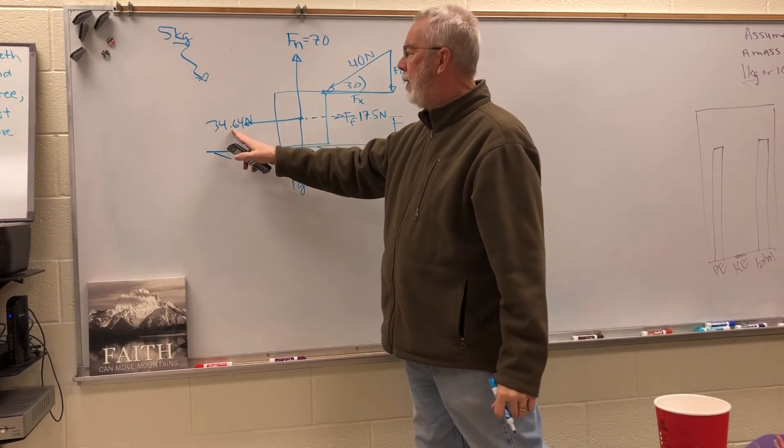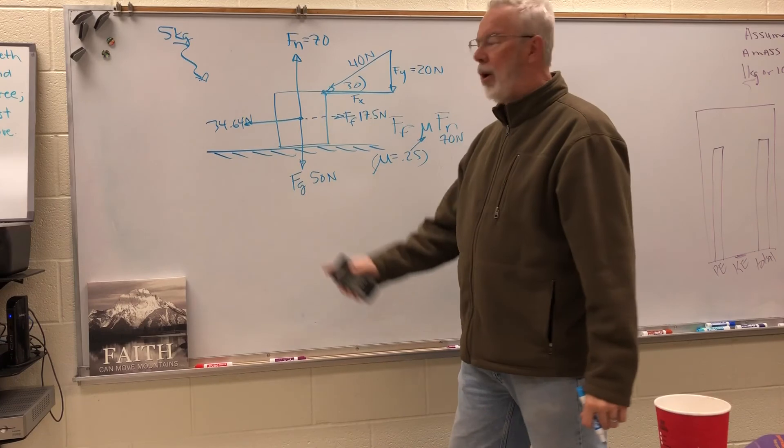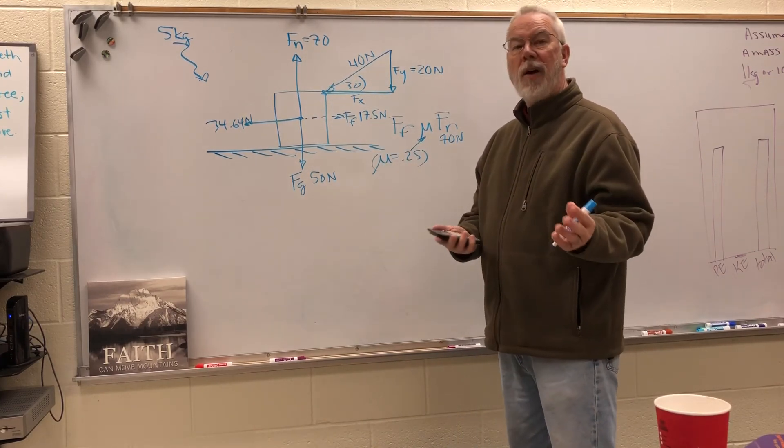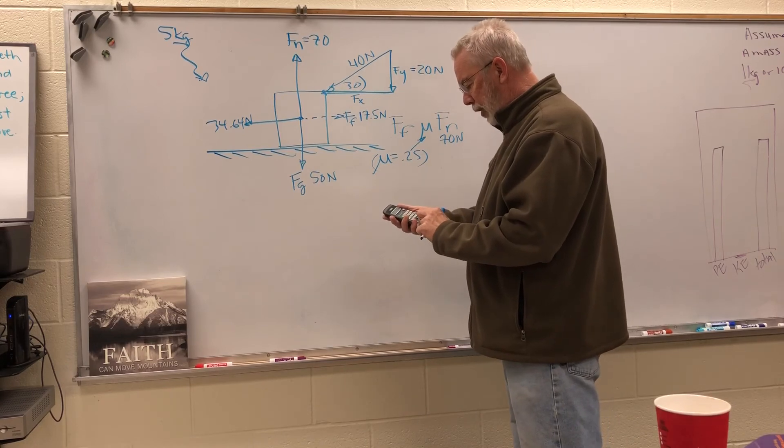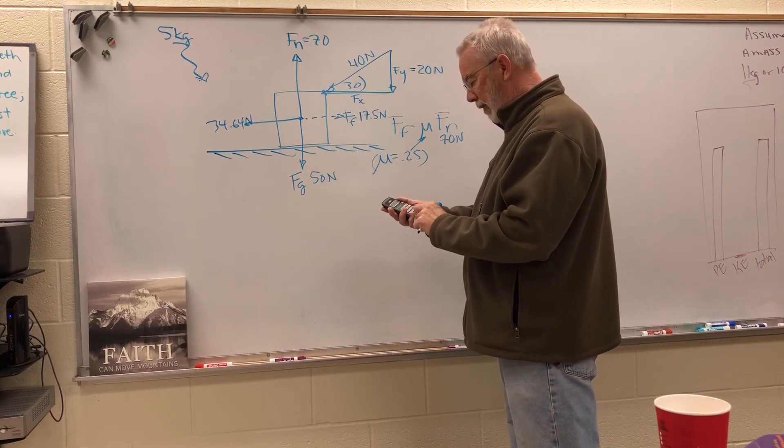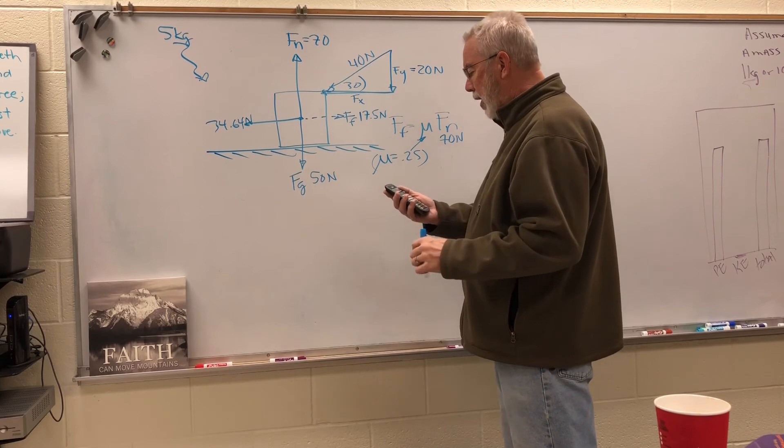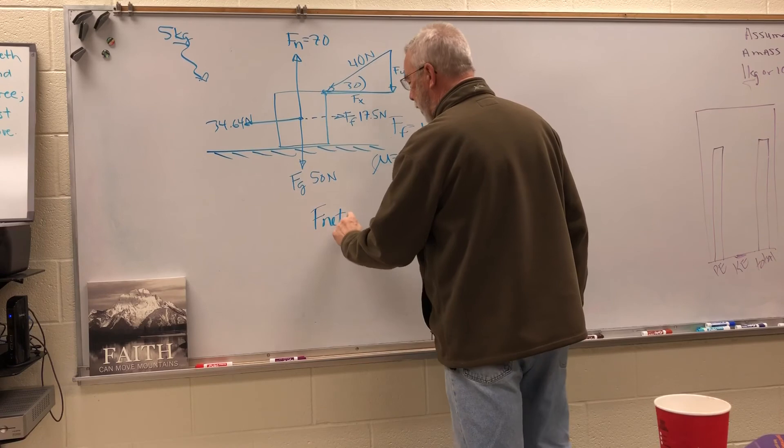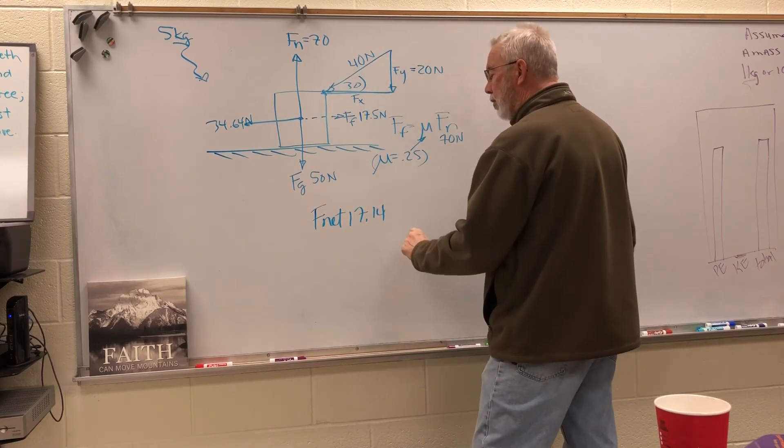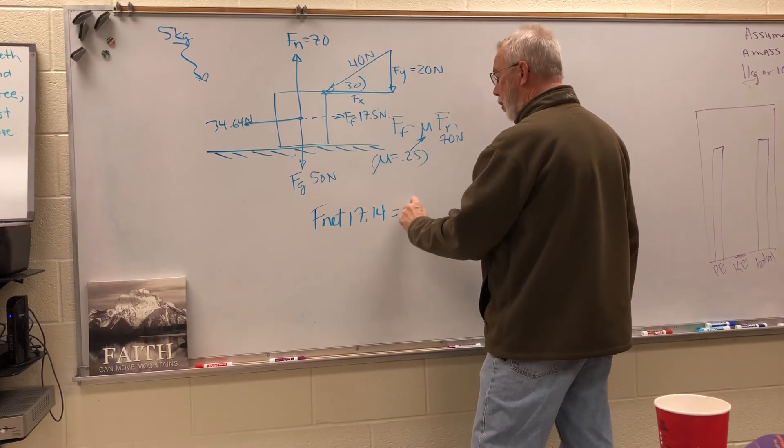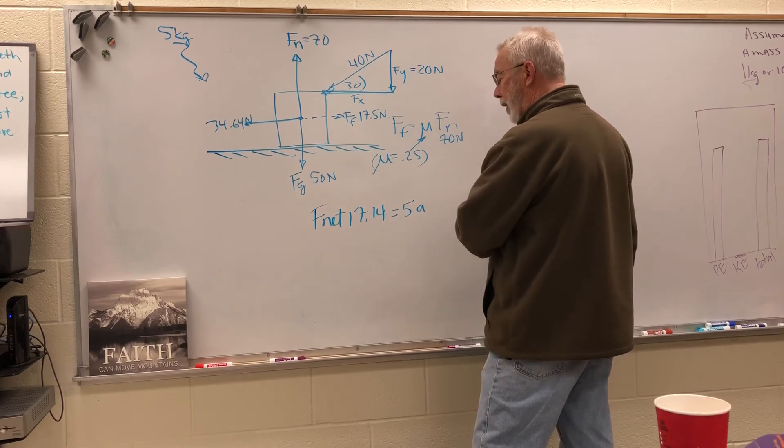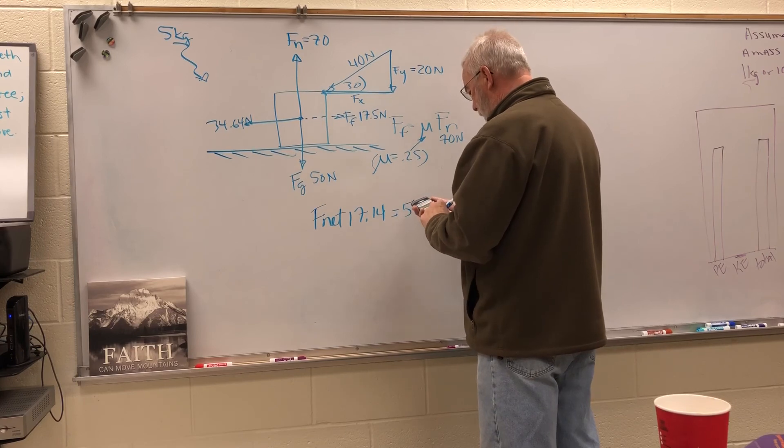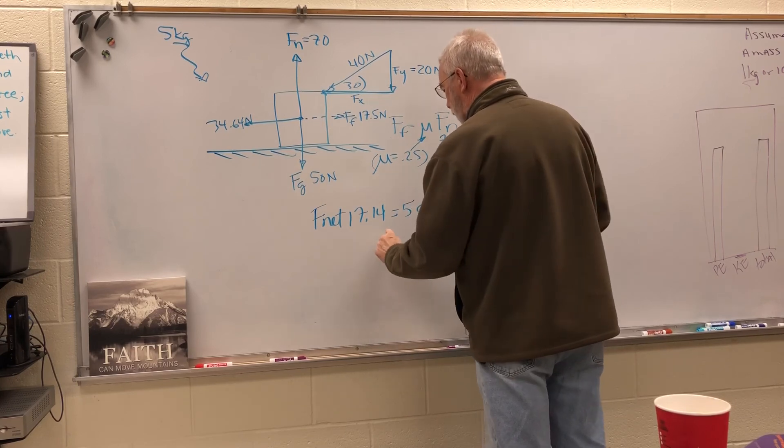So we have 17.5 newtons of friction going to the right, and we have an applied force of 34.64 going to the left. We're going to have to subtract to find out the net force. So 34.64 minus 17.5 equals 17.14. So the net force here is 17.14 newtons, and that's equal to 5a because the mass is still 5.